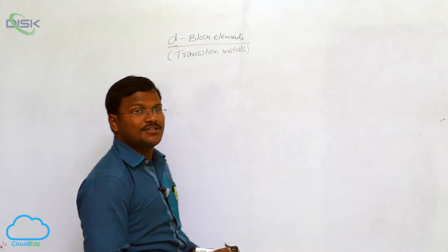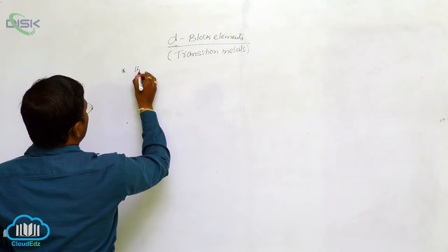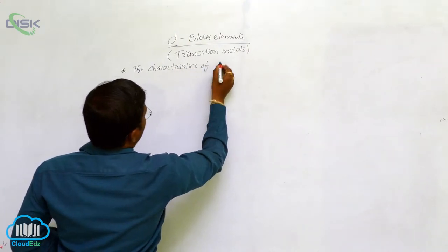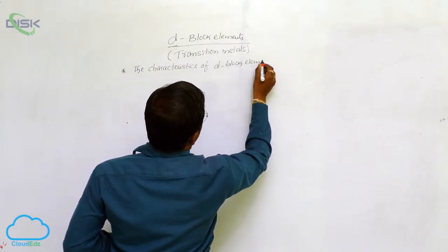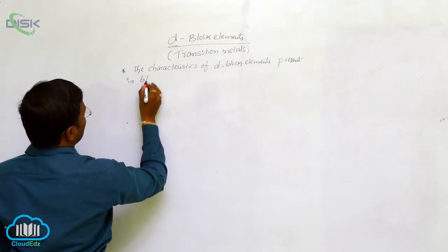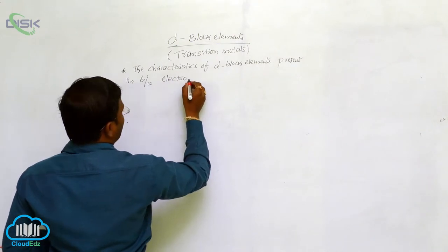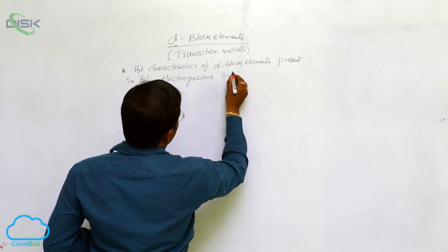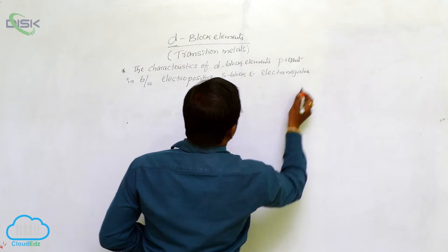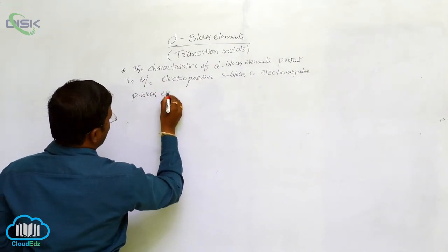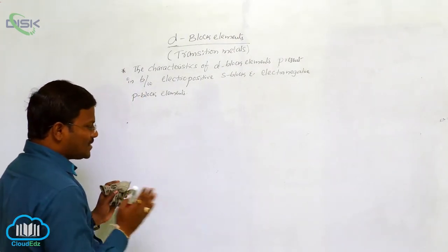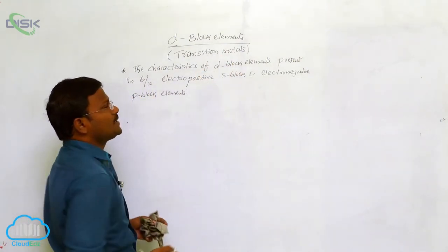Let us understand why they are called transition metals. The D block elements are present in between the electropositive S block and electronegative P block elements. That means the properties of D block elements transition takes place between S block to P block. Hence, they are called as transition metals.